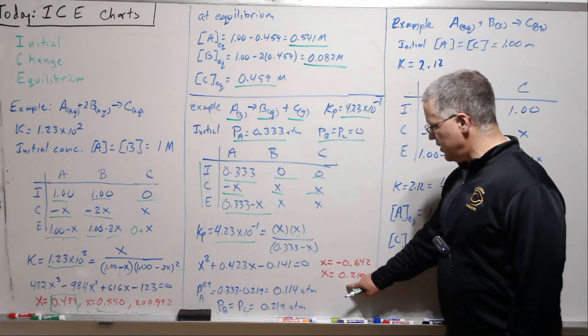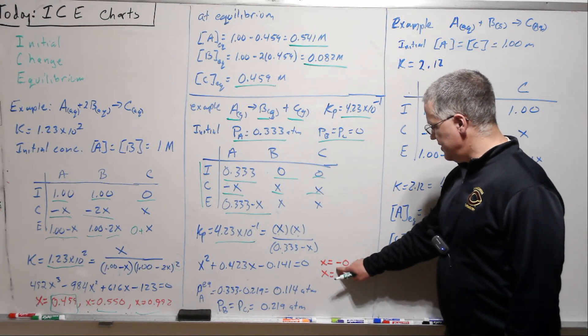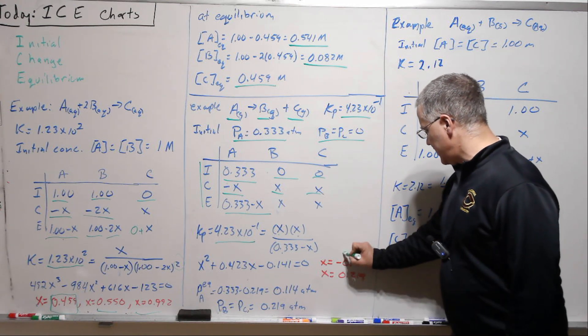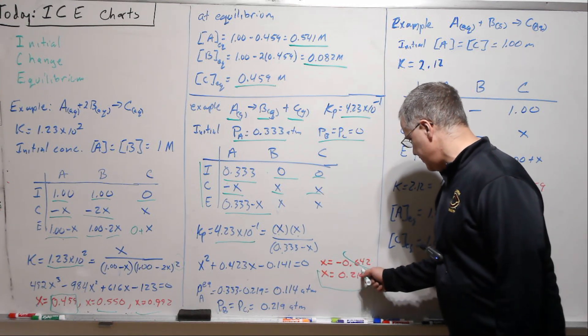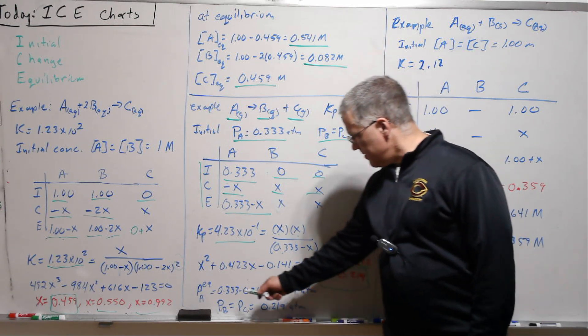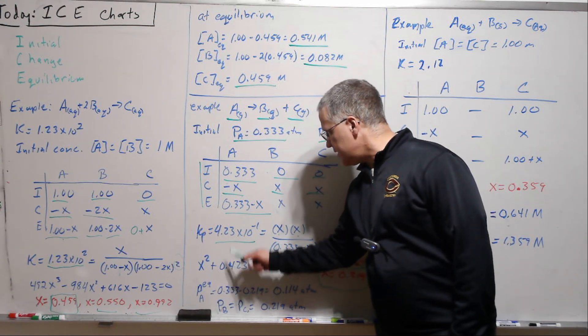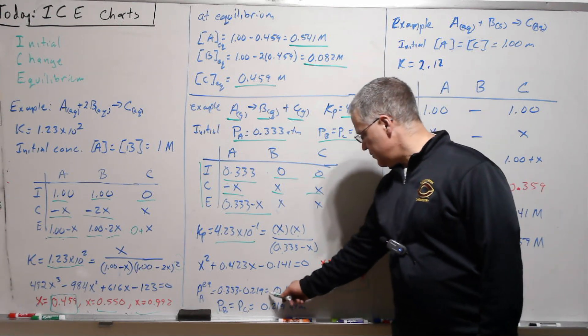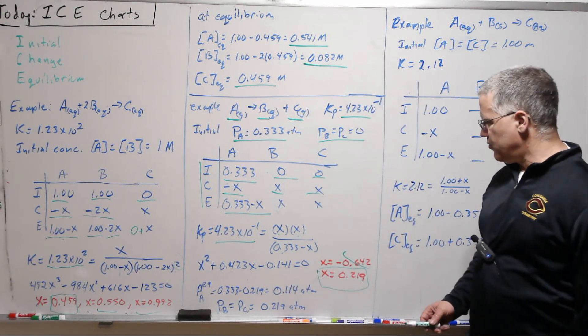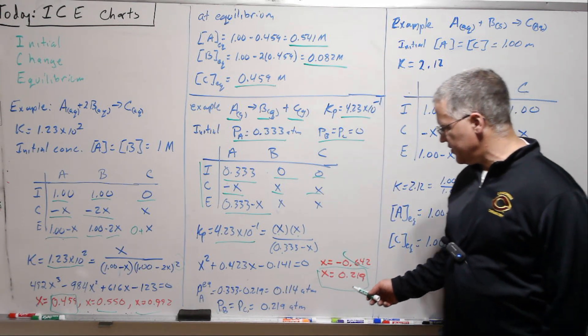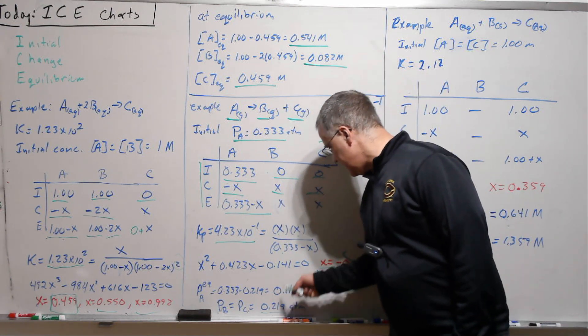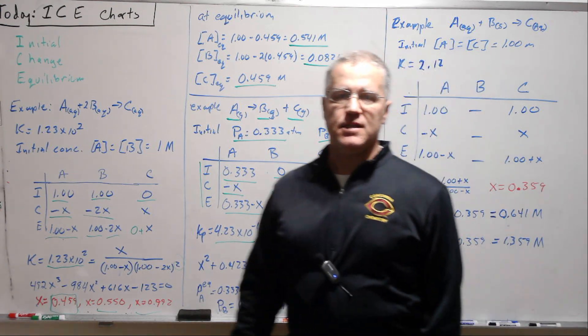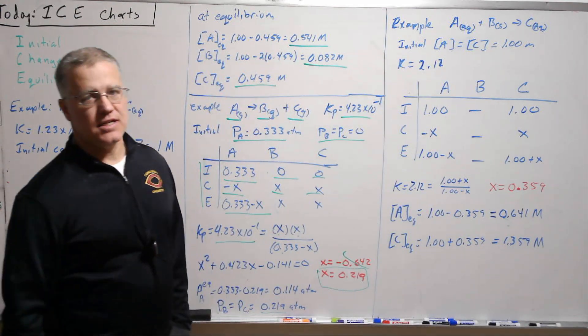One is negative, one is positive. Negative would mean these end up with negative pressures, right? So this one can be tossed out, and so here is our physical solution. And so our partial pressure of A is our initial 0.33 minus this, which equals 0.114 atmospheres, and then B and C are just directly this. So that's an ICE chart involving a Kp.